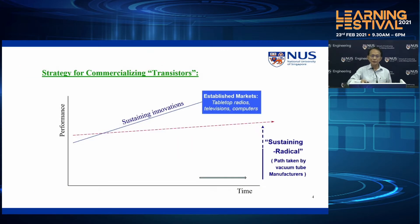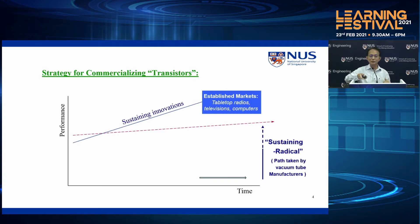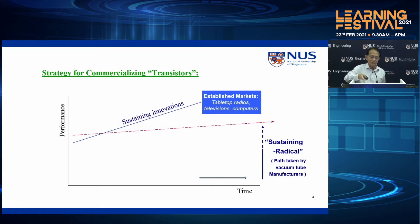I will go through the commercialization of the transistor to demonstrate how an incumbent would treat such an invention and frame it as sustaining innovation. The transistor took many years before it became usable by incumbents. Here is the performance versus time chart — the time scale from here to here is about 20 to 30 years, and it's on a logarithmic scale. So while the line does not look very steep, from here to here there are actually several generations of technological innovation.